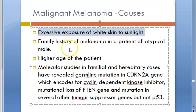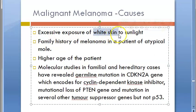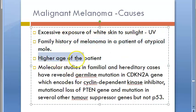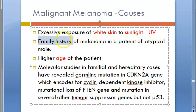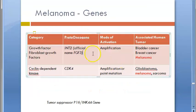Why do people get melanoma? White-skinned people exposed to excess sunlight — UV light — are at risk. Other risk factors include family history of melanoma and older age. You should write: white skin, sunlight/UV rays, family history, and higher age of the patient.